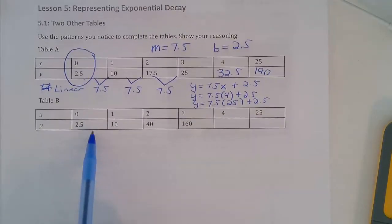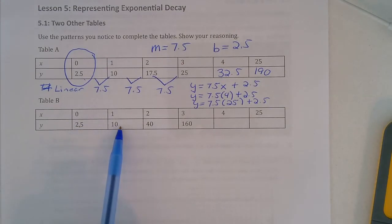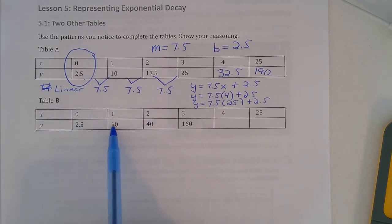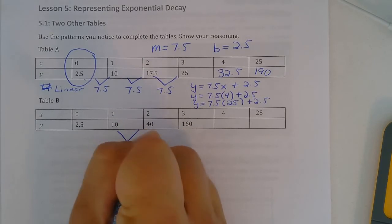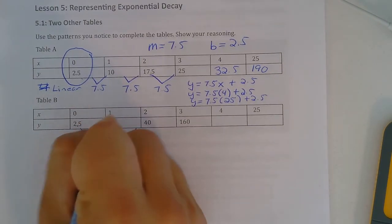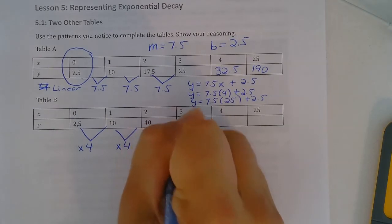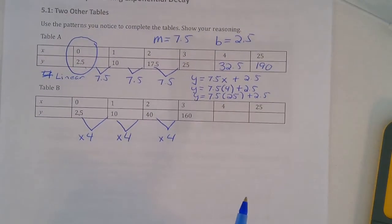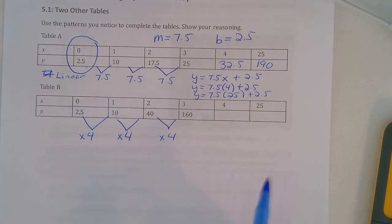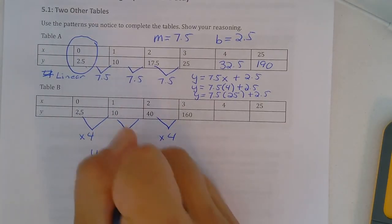Now this equation is different. We go from 2.5 to 10 to 40 to 160. So what I notice is we're not just adding every time. And here if I multiply 10 by 4 we get 40, if I multiply 40 by 4 I get 160. So we're multiplying by a factor of 4, because 2.5 times 4 and by all of these gets us the next number.